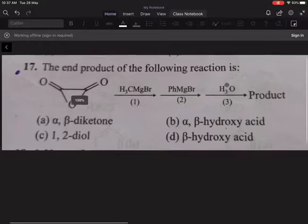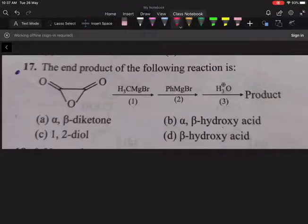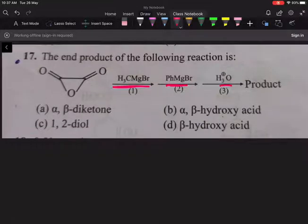The end product of the following reaction is CH3MgBr, PhMgBr and H3O plus. So one thing is ester type structure. If it is ester type structure, we can consider it like this.